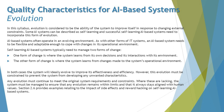AI-based systems often operate in an evolving environment, as with other forms of IT systems. An AI-based system needs to be flexible and adaptable enough to cope with changes in the operational environment. An AI-based system does not retain the same information or responses over time — at some point it needs an upgrade. Self-learning AI-based systems typically need to manage two forms of changes.